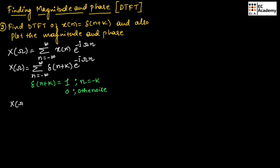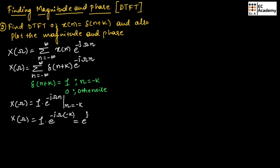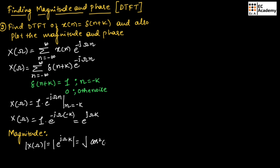Therefore X(ω) = 1 × e^(−jωn) for n = −k. Substituting n = −k gives X(ω) = e^(−jω(−k)) = e^(jωk). To find the magnitude: |X(ω)| = |e^(jωk)| = √(cos²(ωk) + sin²(ωk)) = 1.